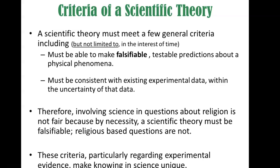Likewise, a lot of people have issues with what would happen before the Big Bang. Science can't tell us anything about what happened before the Big Bang, and a lot of people point to that as a failing of science. But in reality it's not, because we can't make a testable prediction based off of what we think might have happened before the Big Bang, since the laws of physics as we currently understand them did not exist at that time.